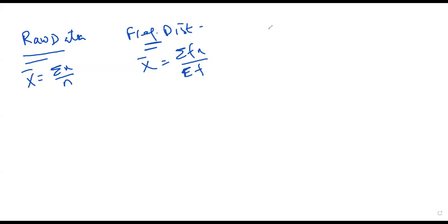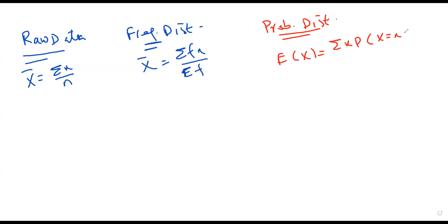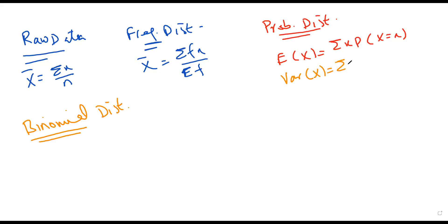In this probability distribution, the formula for the mean — that was called E(X) — was sigma x times the probability x equals x. Then for the variance of x, that was sigma x squared times the probability x equals x, minus E(X) squared.